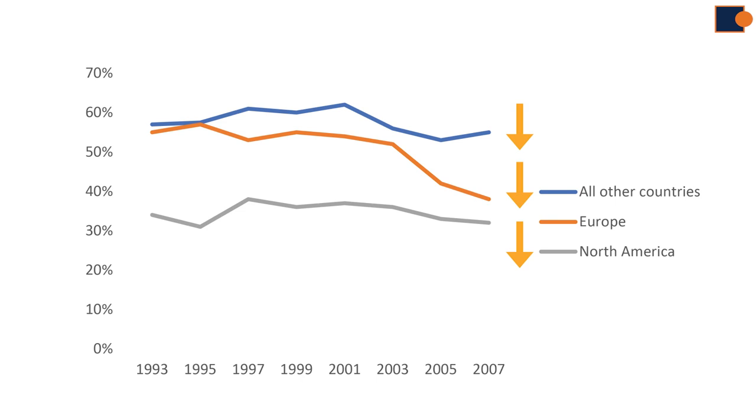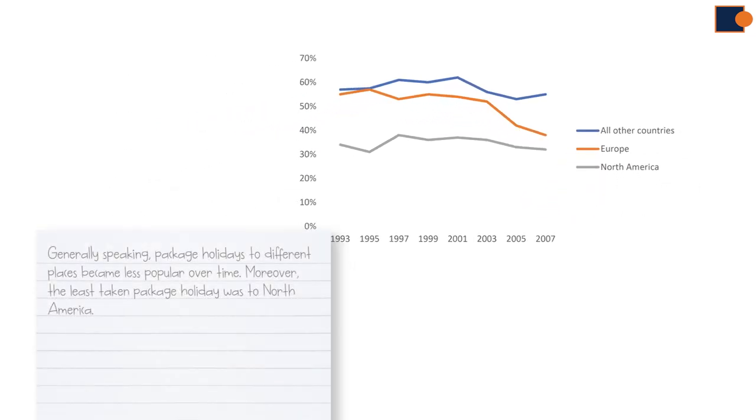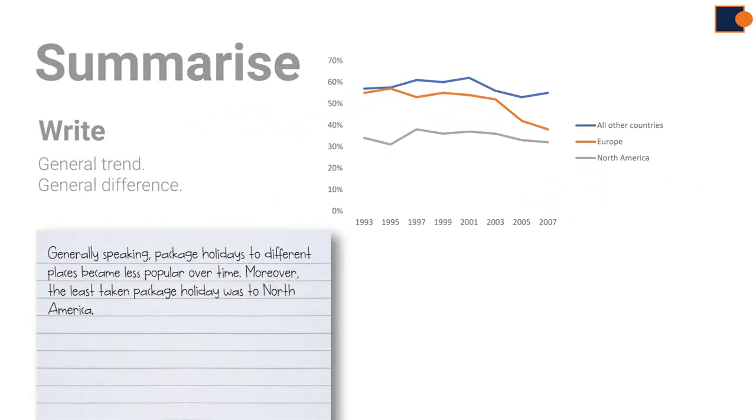So that is why it is possible to write that it became less popular over time. So all trends have kind of a downward movement. When it comes to general differences, visits to all other countries was the highest and North America was the lowest. And you can write this as an addition to the overview shown in the example.